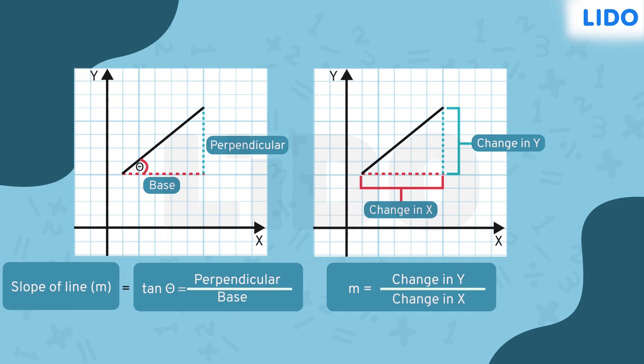Hence, slope is also defined as the change in y divided by the corresponding change in x between two distinct points on the line. The concept of slope seems quite interesting.